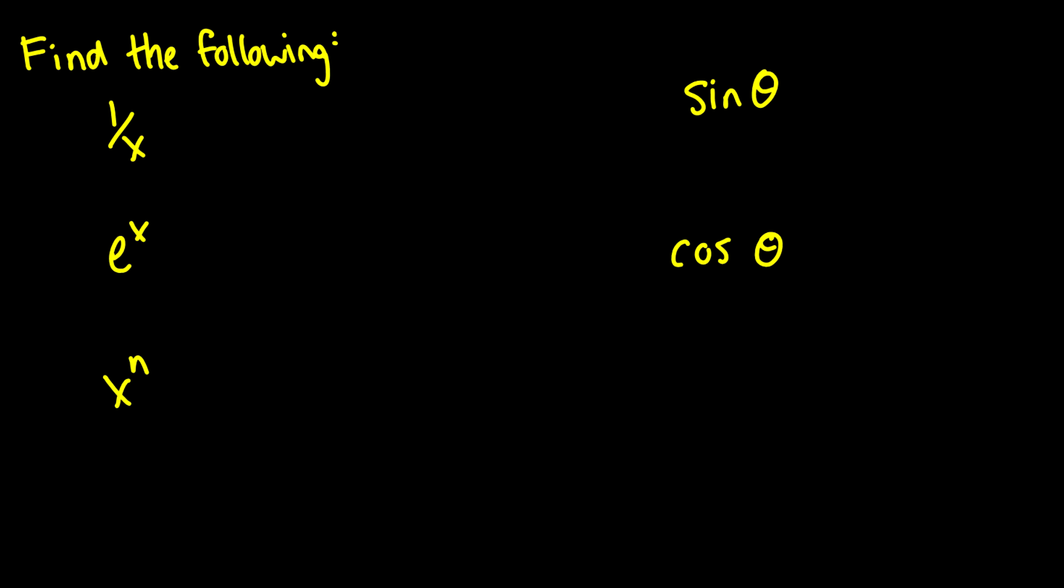1/x is the same thing as taking the derivative of the natural log of x plus some constant. So if we take ln(x), we take its derivative, then we get 1/x. e^x, well, the derivative of e^x is always itself. So the antiderivative of e^x is also itself.